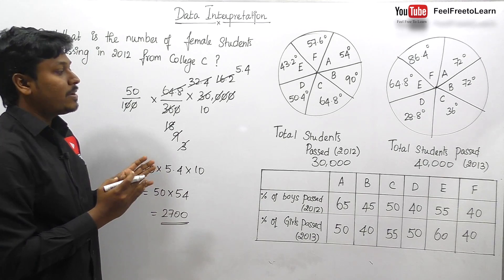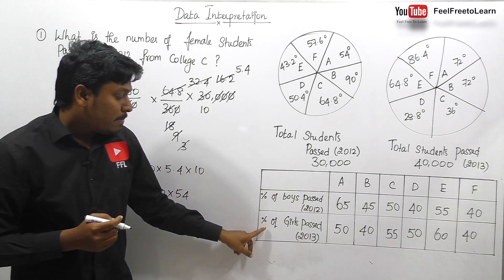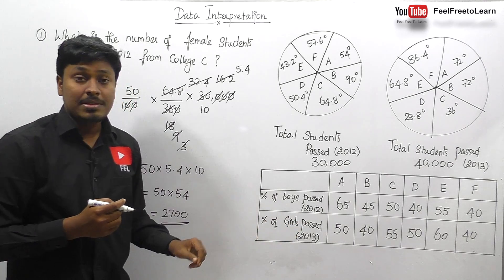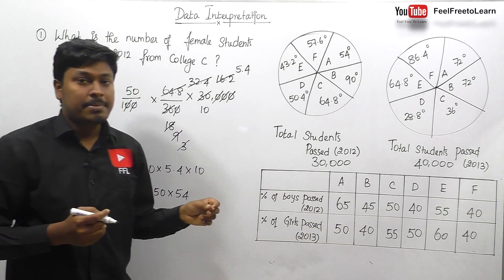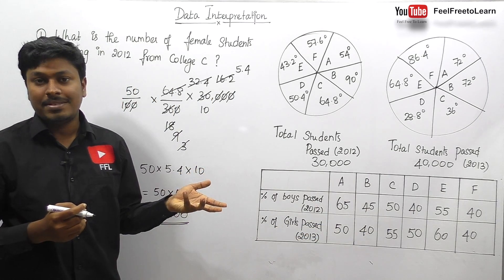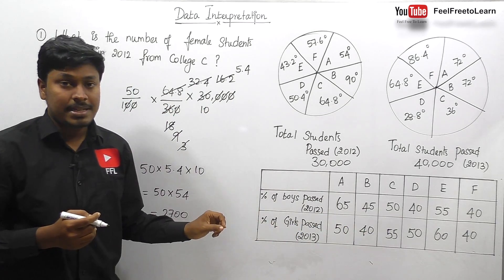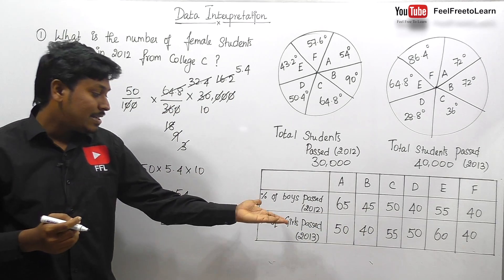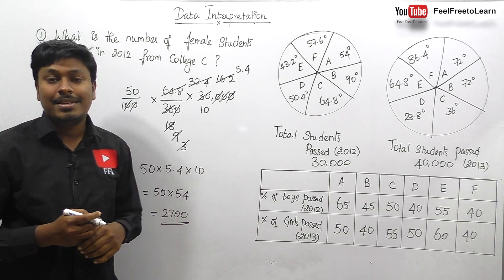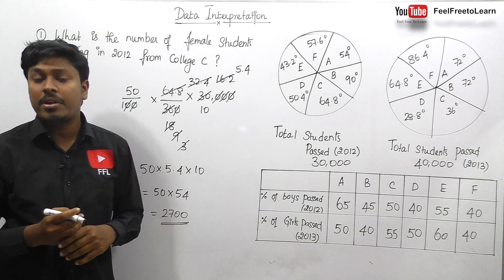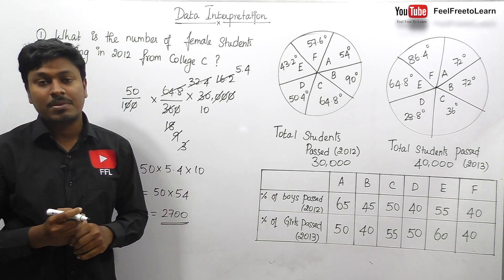The most important thing to note: in this table chart they are only talking about boys for 2012. Similarly, for percentage of girls passed in 2013 — if in College B, 2013, 40% of girls passed, then we can surely say that the remaining 60% will be boys passed in the year 2013. If you understand this concept clearly, solving all the questions will be very easy.